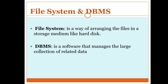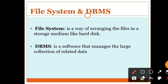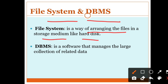The file system is basically a way of arranging files in a storage medium like a hard disk — we can say the file system is used to manage data in storage medium like a hard disk. DBMS, on the other hand, is a software that manages a large collection of related data — data which is related to one another.